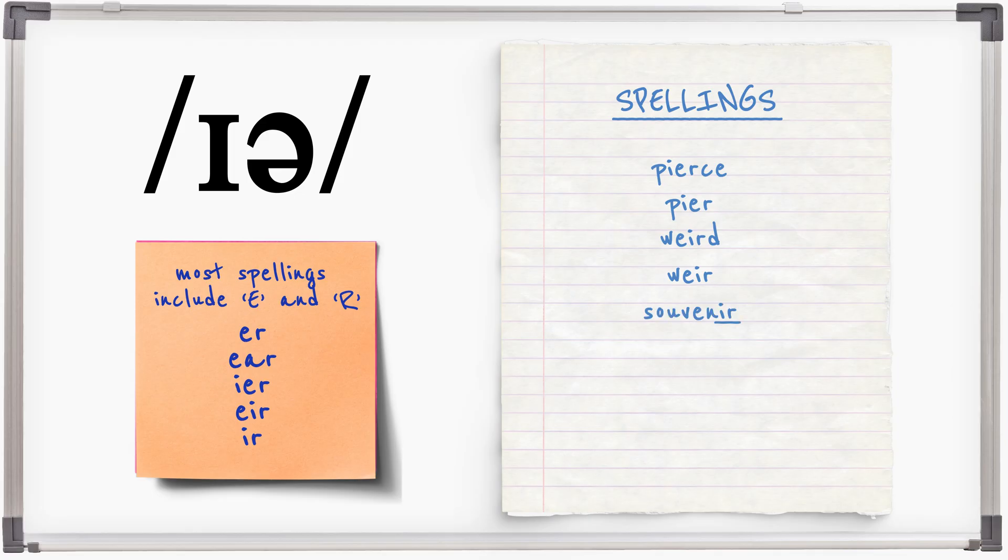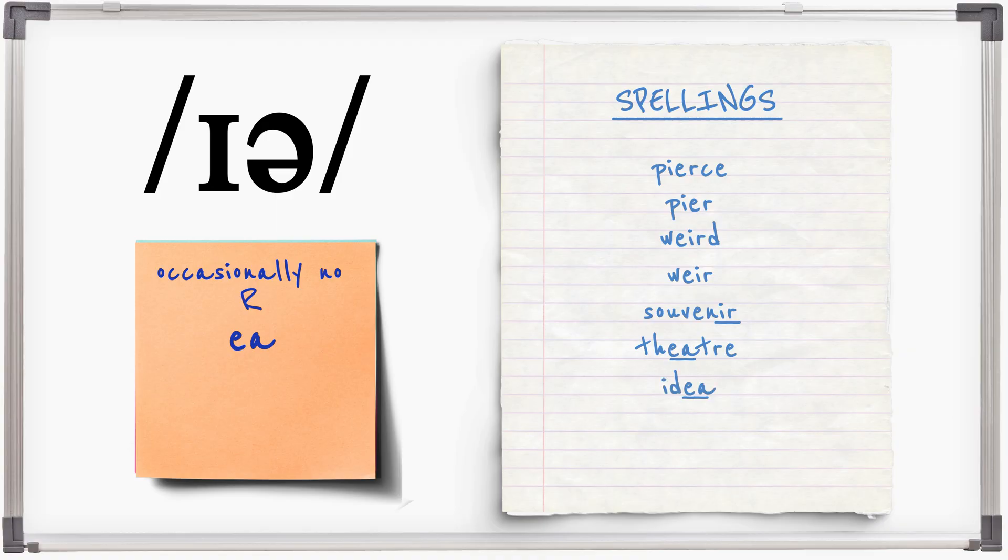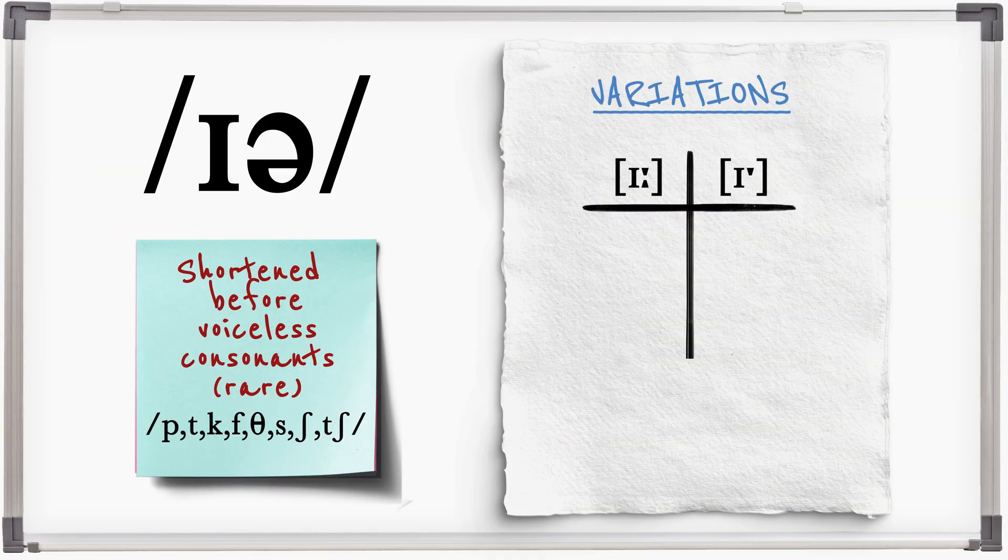It can occasionally be spelt without R: Theater, idea. As a long vowel sound, ear will shorten before a voiceless consonant, though this is fairly rare.